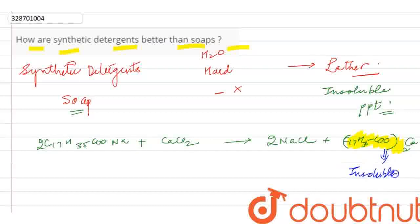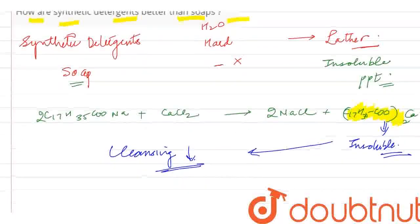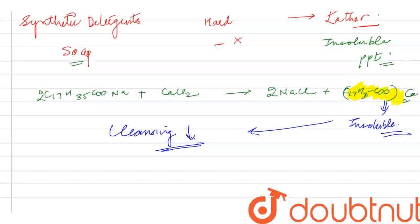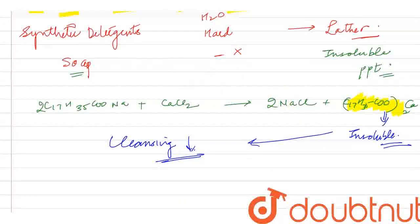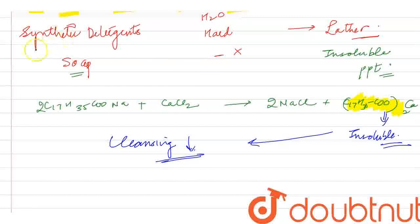Insoluble calcium and magnesium salt with hard water reduces the cleansing action. And when I use synthetic detergent, it is soluble. So this is the reason why we prefer the use of synthetic detergents.